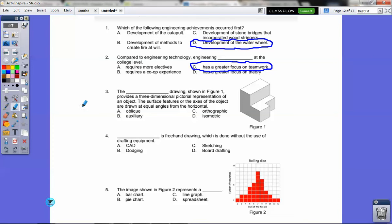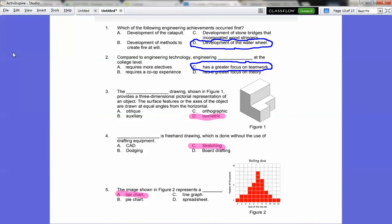Question number three. The blank drawing showing in figure one provides a three-dimensional pictorial representation of an object. The surface features or the axis of the object are drawn at equal angles for the horizontal. What kind of drawing is this? You should remember this from IED. It's isometric. Question number four. Blank is freehand drawing, which is done without the use of drafting equipment. Which of those techniques is it? Sketching. And the last question on this page. The image shown in figure two represents a what? Bar chart, pie chart, line graph, or spreadsheet? That is a bar chart, ladies and gentlemen. If frequency was the y-axis, we also could say it's a histogram.